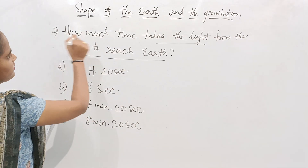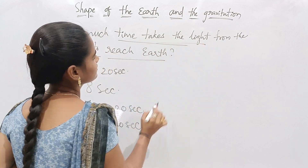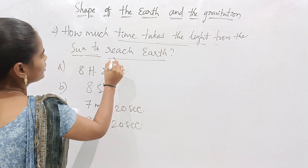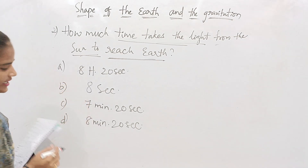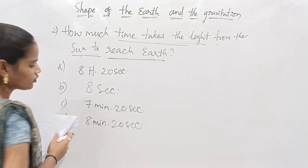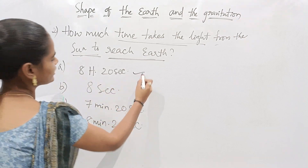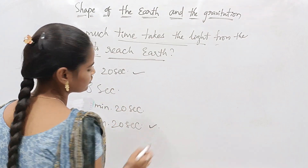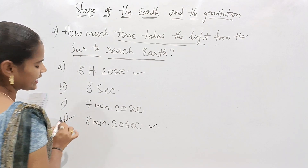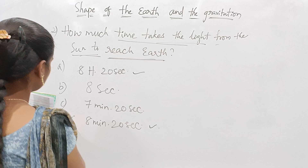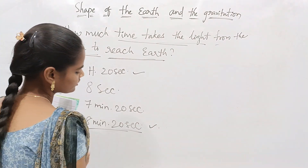They are asking about the time it takes for light to travel from the sun to the earth. The correct answer is 8 minutes 20 seconds. Don't get confused between 8 hours 20 seconds and 8 minutes 20 seconds. The light takes 8 minutes 20 seconds to reach from the sun to the earth.